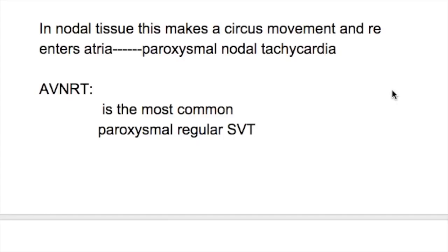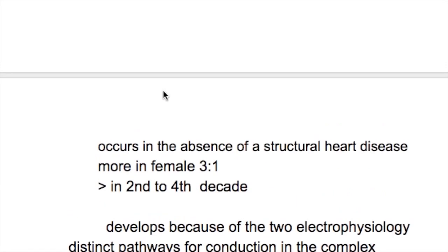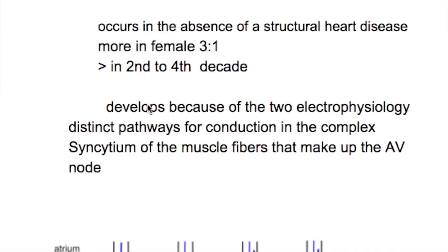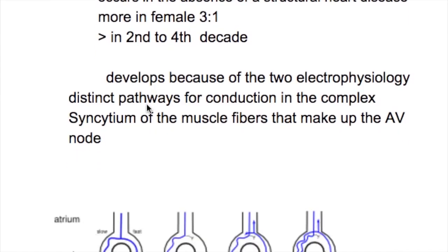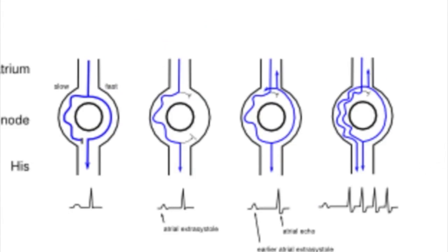AVNRT is the most common paroxysmal regular supraventricular tachycardia. It occurs in the absence of structural heart disease and develops because of two electrophysiologically distinct pathways for conduction — slow and fast — in the complex continuum of muscle fibers that make up the AV node.